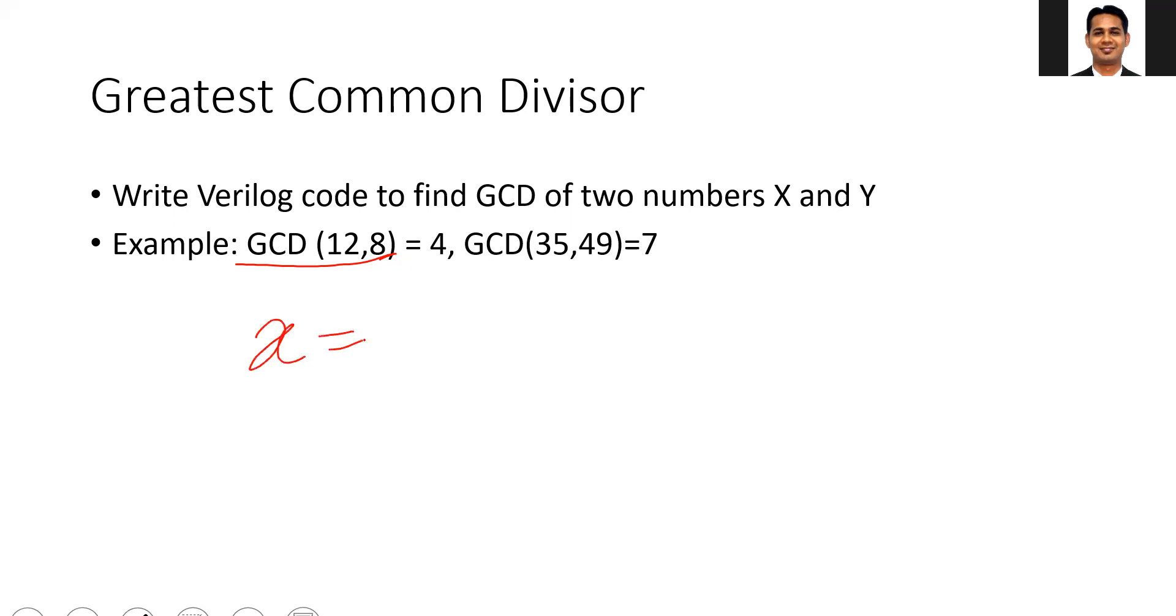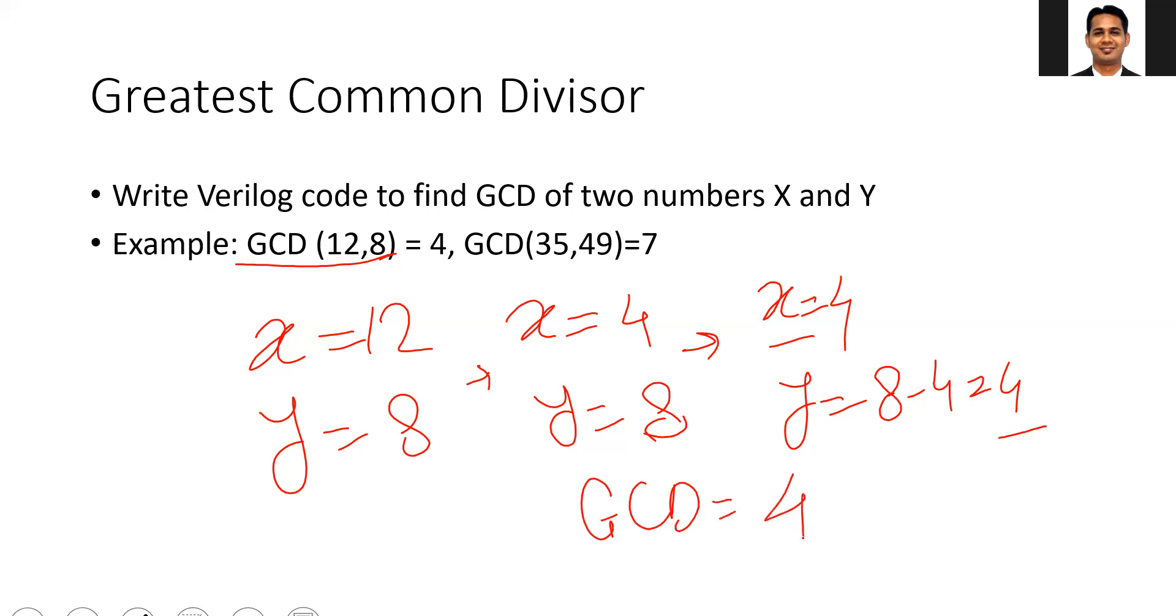You take two numbers, say x equals 12 and y equals 8. First, you subtract the larger number with the smaller number and replace that larger number with the subtraction. Here you subtract 12 from 8 and get 4, and y remains 8. Then again, repeat the same process. The smaller number remains the same and the larger number is subtracted from the smaller number, 8 minus 4. You get 4 and stop when both numbers are equal, and your GCD becomes equal to that final number.